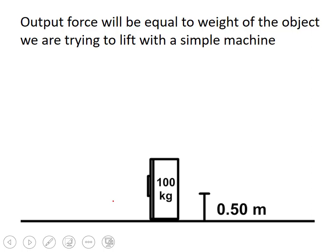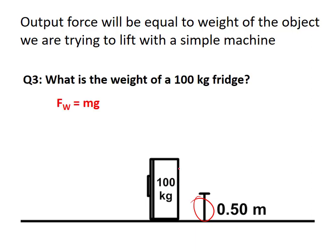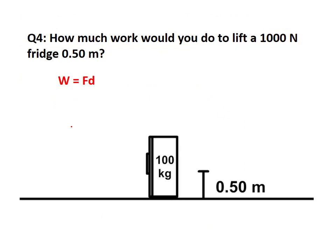The output force equals the weight of the object. Without a simple machine, you'd be lifting the full weight. For example, a 100 kg fridge has a weight of 1,000 N (multiplying by 10). The goal might be to lift it 0.5 meters. How much work to lift a 1,000 N fridge 0.5 m? Work = force × distance = 1,000 × 0.5 = 500 joules.